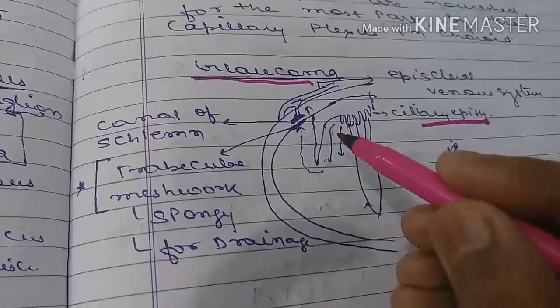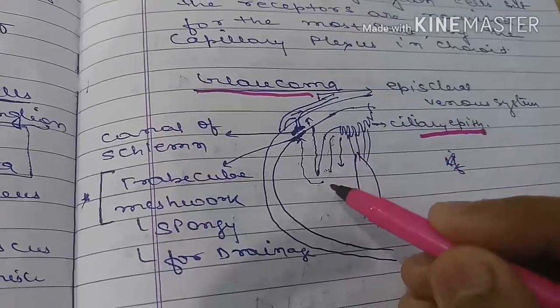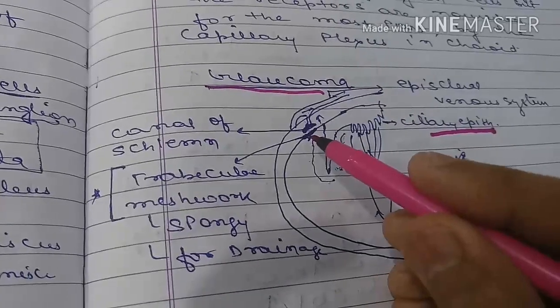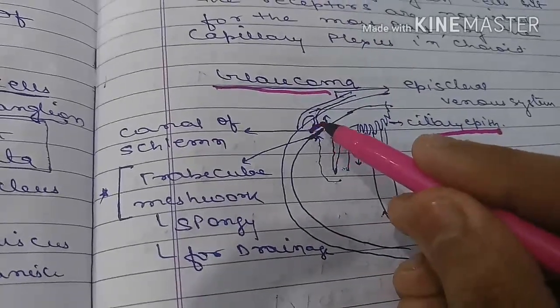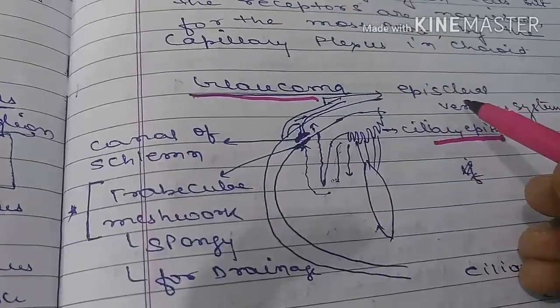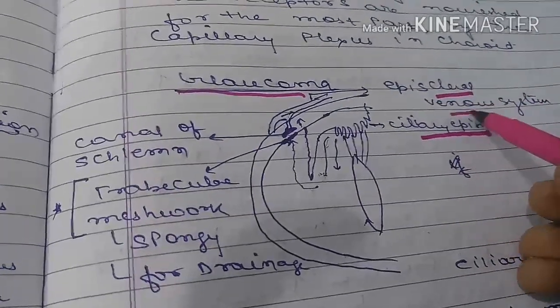From the posterior chamber it goes into the anterior chamber, and through the trabecular meshwork it goes into the canal of Schlemm and then to the episcleral venous system. This is the drainage pathway for aqueous humor.